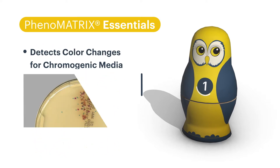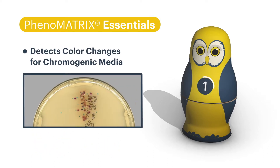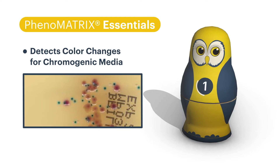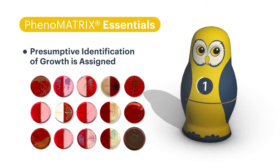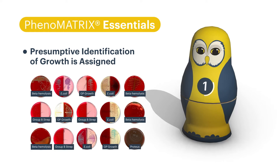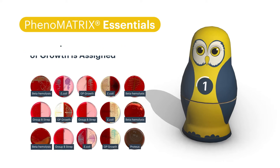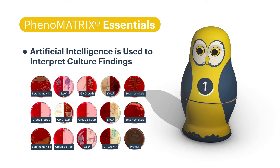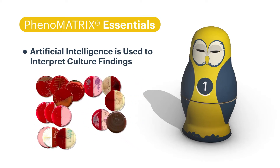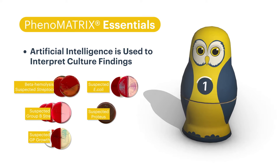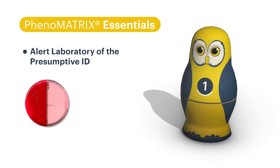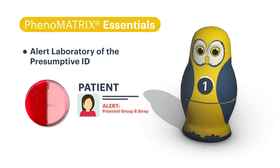Phenomatrix detects color changes on chromogenic media for urine pathogens, commensals, and organisms of particular interest, and presumptive identification of growth is assigned. Phenomatrix AI utilizes relevant patient information from the LIS to interpret culture findings and segregate patient results into folders for a technologist to review. By matching organism growth with specific patient data, Phenomatrix can alert the laboratory of the presumptive ID.